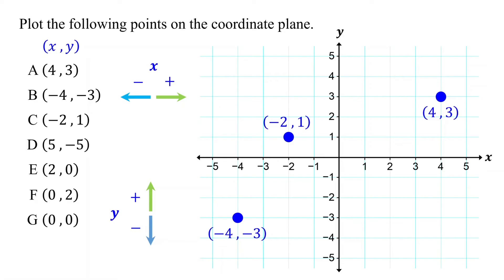Try to plot point D as well. The x-coordinate is positive 5, so start at the origin and move to the right 5 units. The y-coordinate is negative 5, so move down 5 units. Finally, mark the point where you end up. This is the point (5, -5).